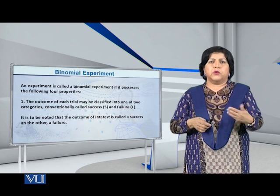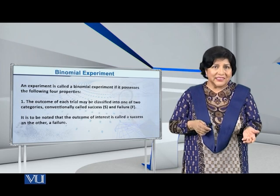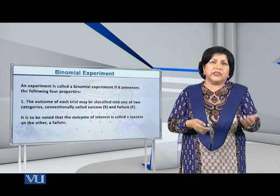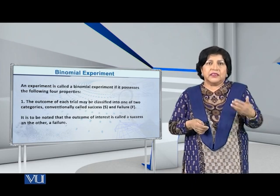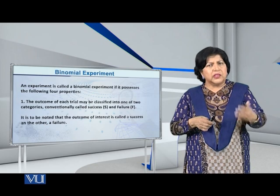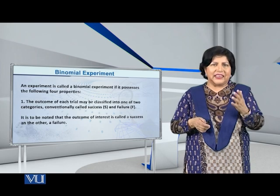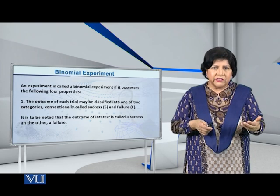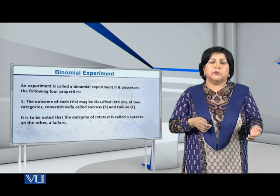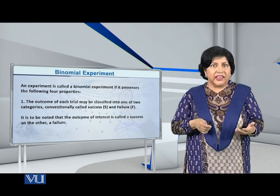There are two possibilities: either we will get a head or we will get a tail. So if we regard head as success and tail as failure, then this first condition is obviously being fulfilled. Every time I toss the coin, I will be getting either a head or a tail. The outcome of each trial may be classified into one out of two categories: success and failure.